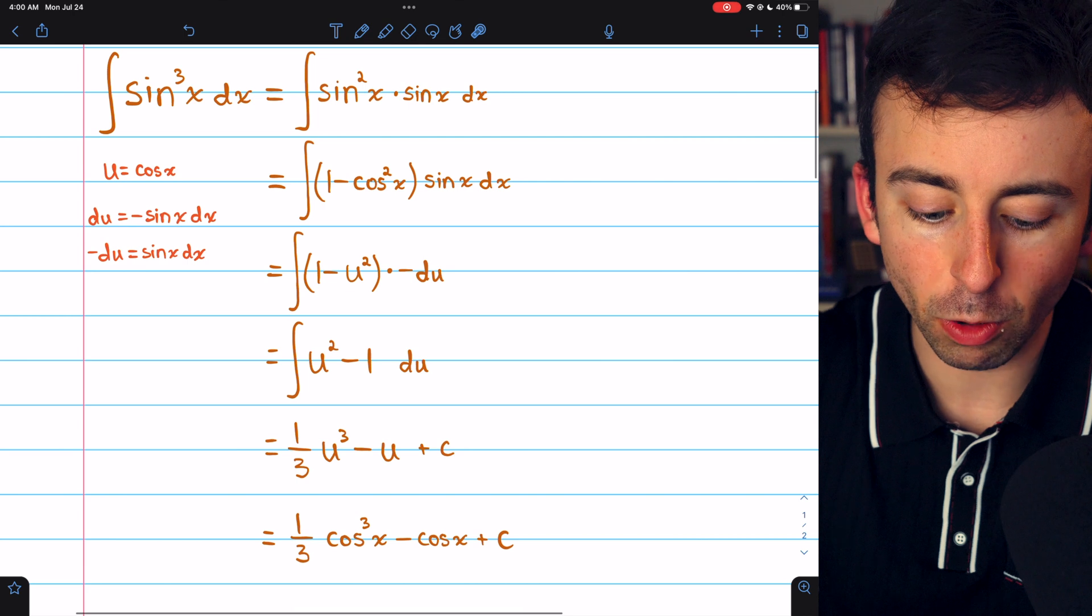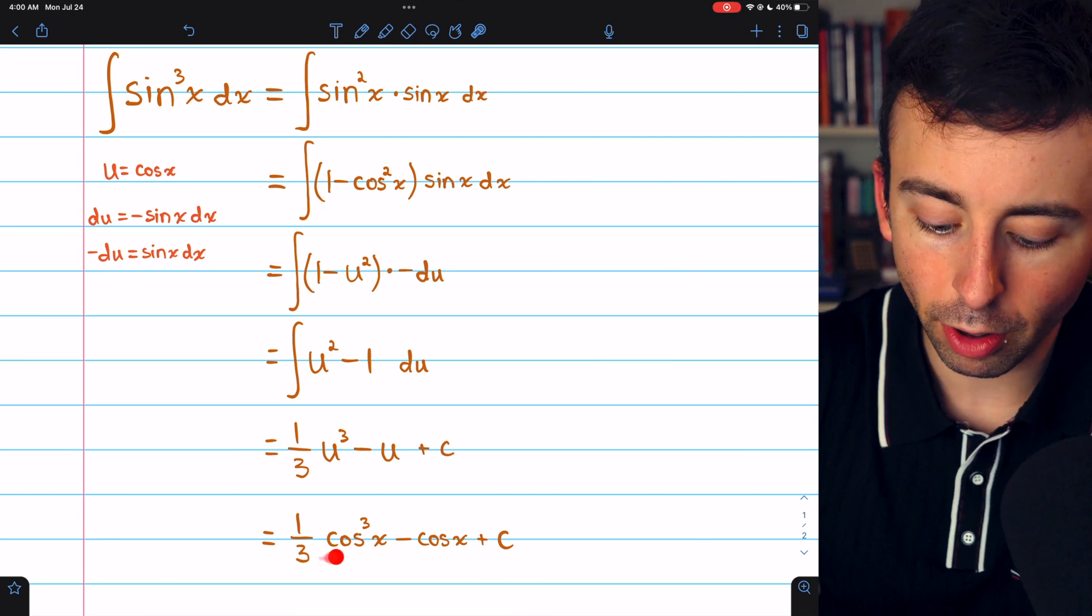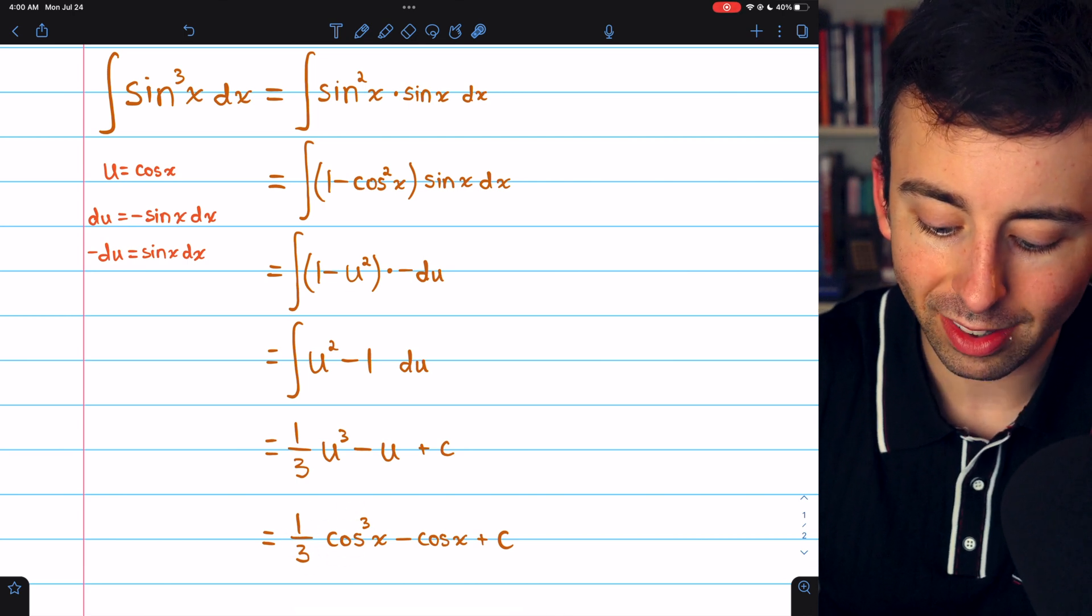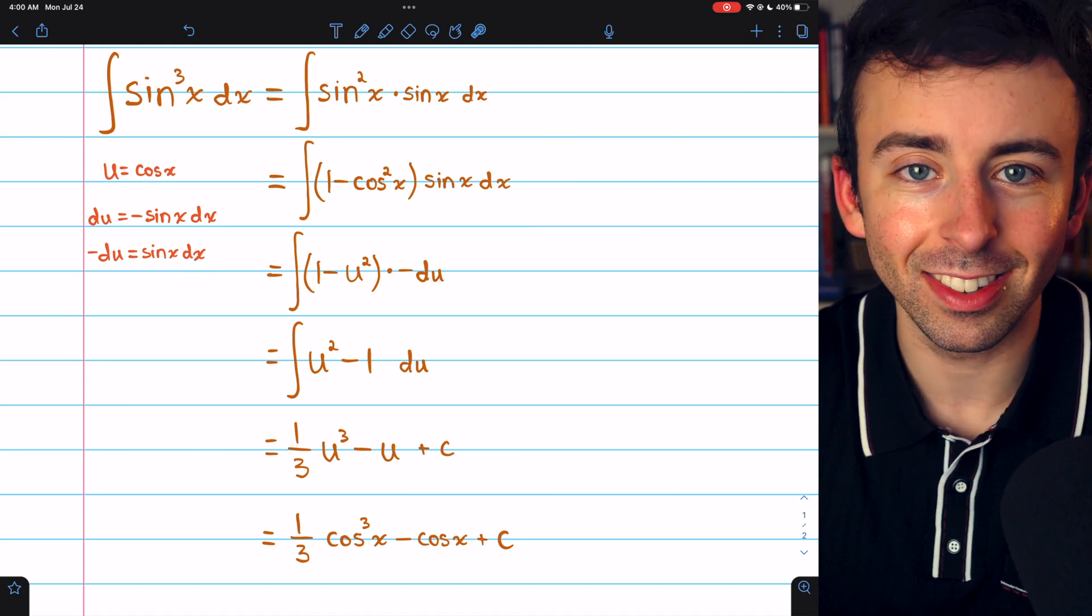So finally, the integral of sine cubed of x is one third cosine cubed of x minus cosine of x plus c.